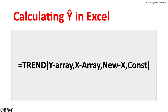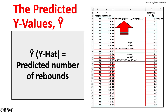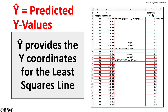Excel's TREND function calculates the predicted values of the dependent variable, Y-hat. It has four arguments: the Y array (dependent variables), the X array (independent variables), new X (the independent variable used to predict Y, which is optional), and CONST — if blank or true, the slope is normally calculated; if false, the slope is set to zero. Y-hat, along with the independent variable X, provides the coordinates for the least squares line.